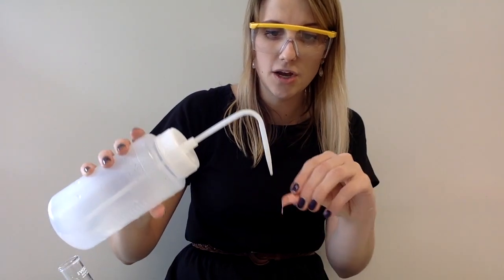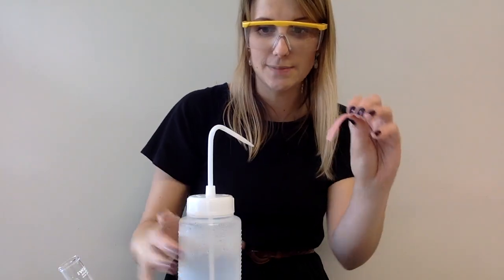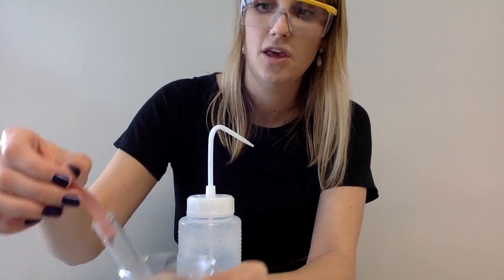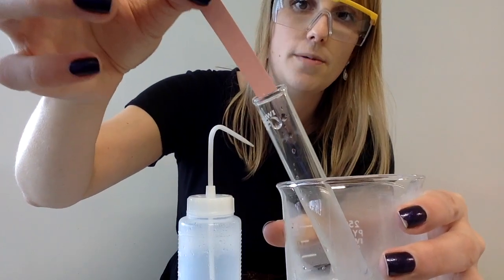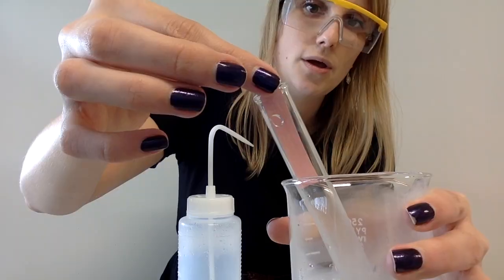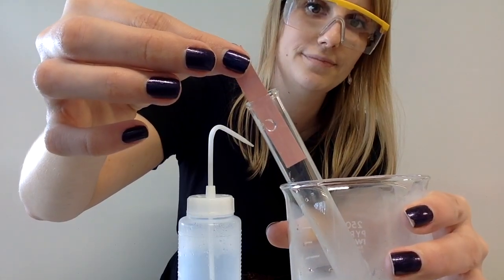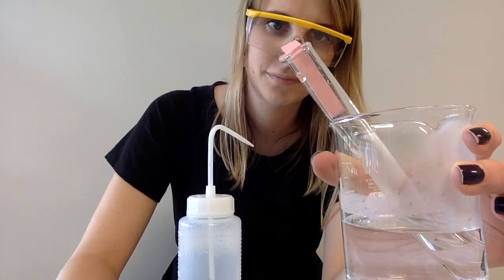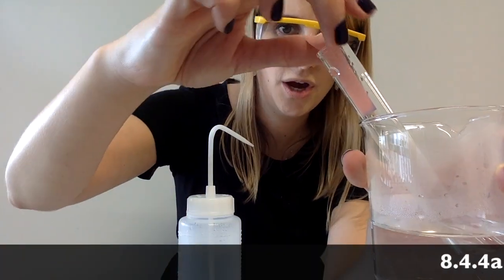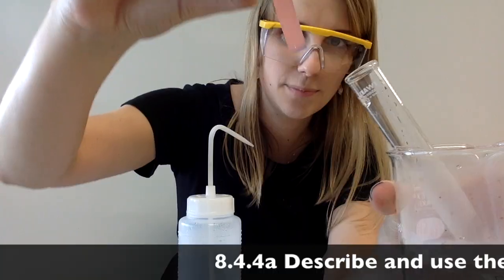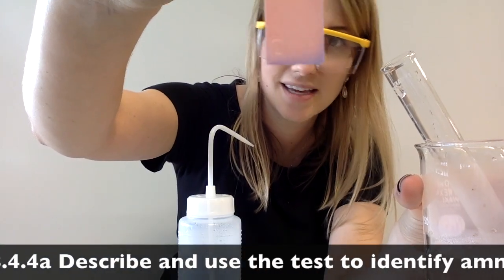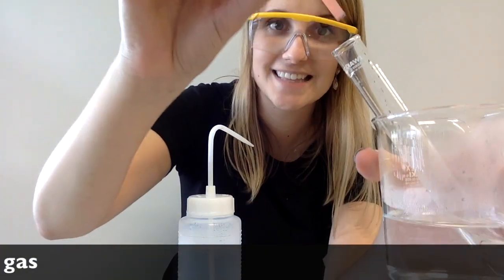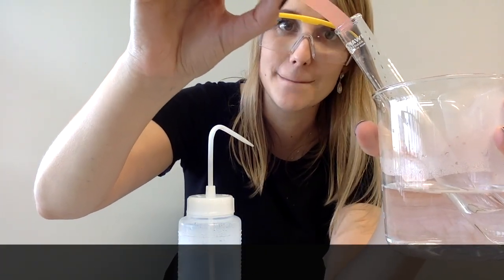Damp red litmus paper in the presence of ammonia will turn from red to blue. So hopefully what you can see is that the bottom of that litmus paper is definitely turning a blue color, indicating the presence of ammonia.